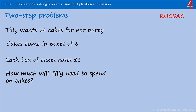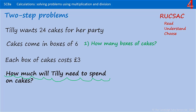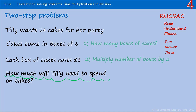Here's where the Rucksack acronym comes in really useful. You read the question and understand what it's asking you to do. We need to find out how much Tilly's going to spend. We need to choose the calculations we're going to use to solve this. We need to find out how many boxes of cakes she will buy, and then multiply that number by three because each box will be three pounds. Then we need to solve it and check that we have actually answered the question: how much will Tilly need to spend on cakes?